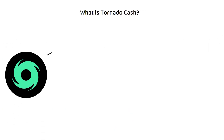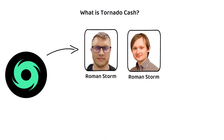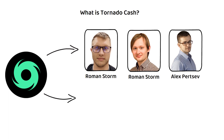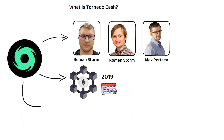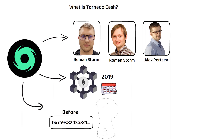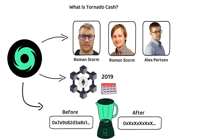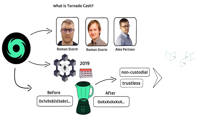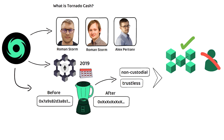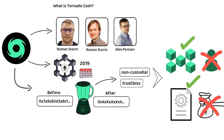Tornado Cash was created by Roman and Alex, and launched on the Ethereum network in 2019. Briefly put, Tornado Cash is a way to make Ethereum transactions anonymous, and it does this by implementing a non-custodial and trustless mixing protocol. This is a fancy way of saying it is decentralized with no one in charge — it doesn't hold your finances, and its mixing process occurs automatically thanks to smart contract technology.